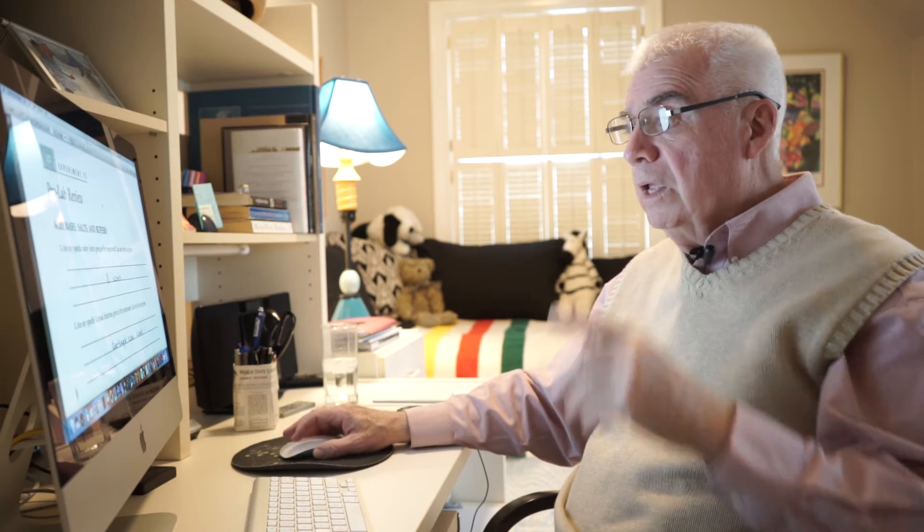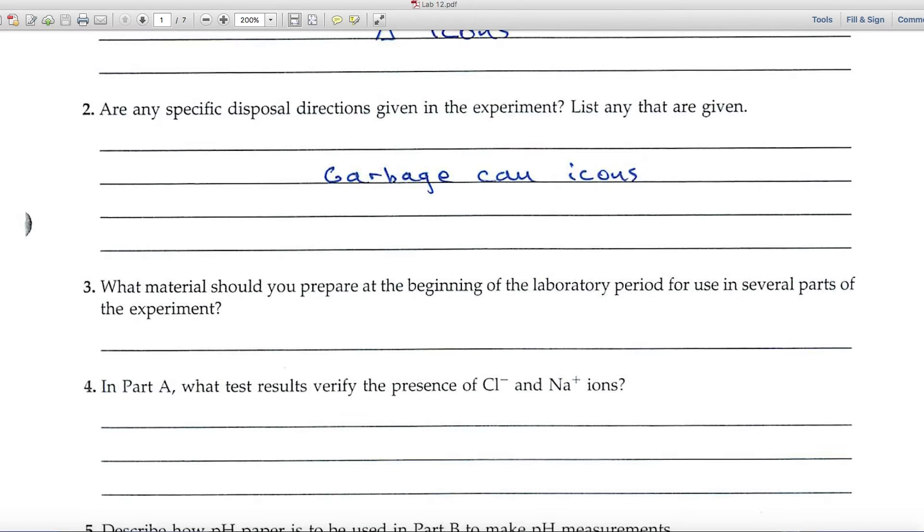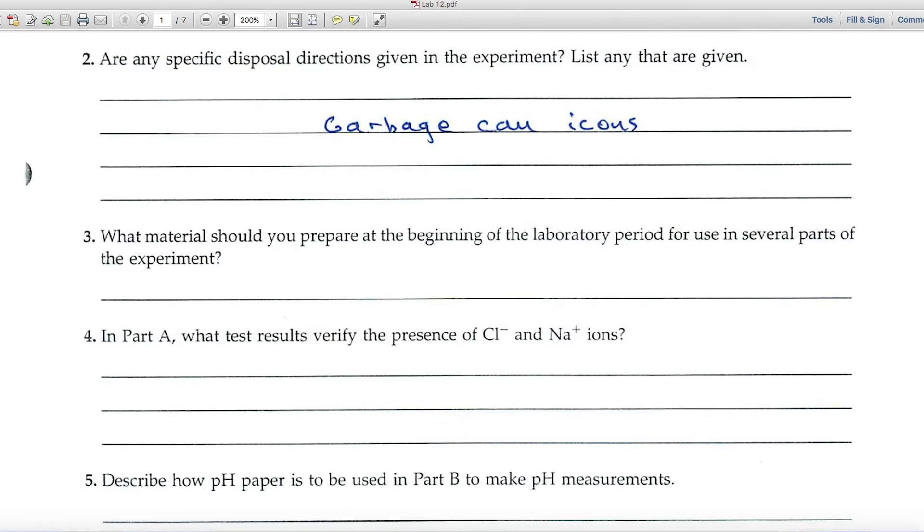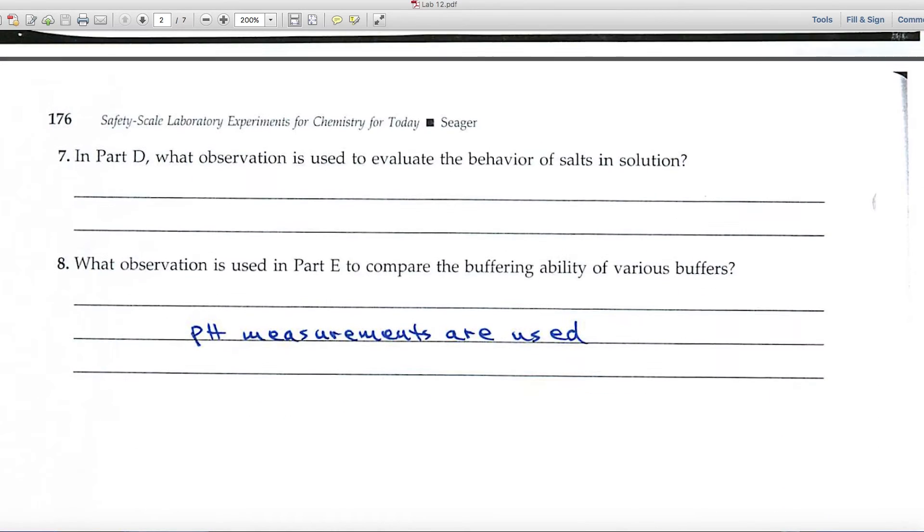Question number one looks at safety alerts. Look for the triangle icons. Number two, the disposal directions. Look for garbage can icons. Several questions here, not too bad.